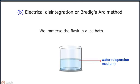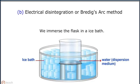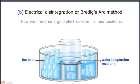We immerse the flask in an ice bath. Now we immerse two gold electrodes in inclined positions.